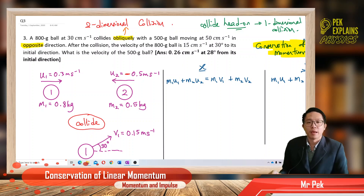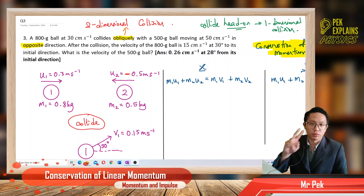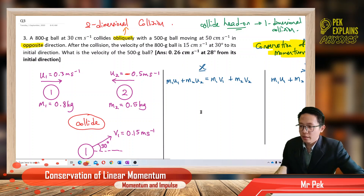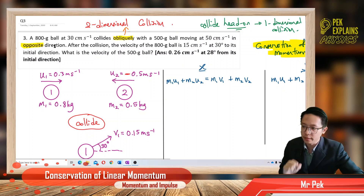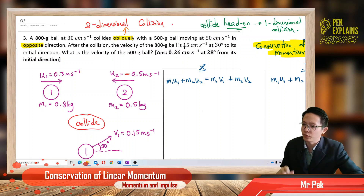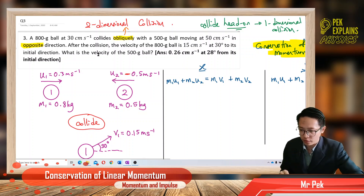Hi, welcome back. I'm Mr. Peck here. Today we are going to learn about two-dimensional collisions. Here's the question: an 800-gram ball at 30 cm per second collides obliquely with a 500-gram ball moving at 50 cm per second in the opposite direction. After the collision, the velocity of the 800-gram ball is 15 cm per second at 30 degrees to its initial direction. What is the velocity of the 500-gram ball?